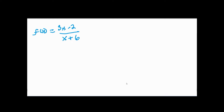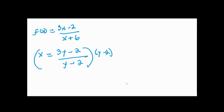We're going to find the inverse of this function. To find the inverse, as taught in algebra, you replace x with y and turn f(x) into x, then solve for y. So f(x) becomes x and every x becomes a y, giving us x = (3y - 2) / (y + 6). A common method is to get rid of the denominator by multiplying both sides by (y + 6), giving us xy + 6x = 3y - 2.